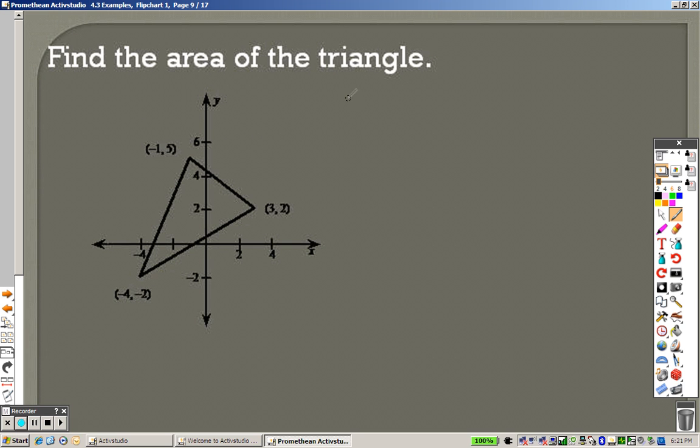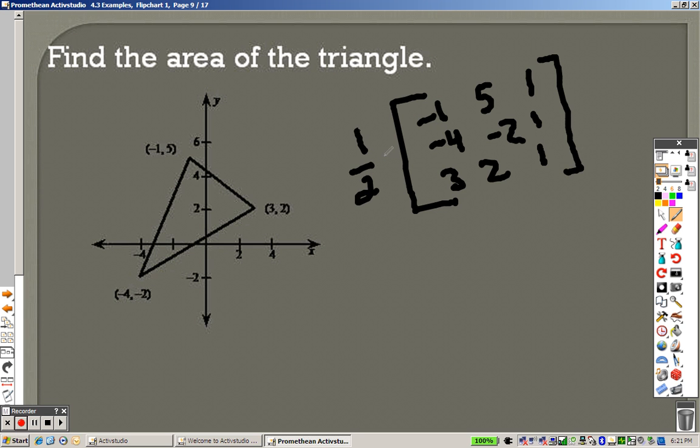So using that idea here, same concept, the triangle negative 1, 5, negative 4, negative 2, 3, 2, and we put 1s down the side. You're going to multiply this by a half. So find the determinant, and then multiply it by a half.